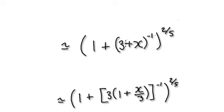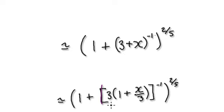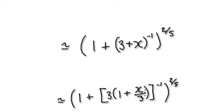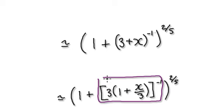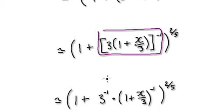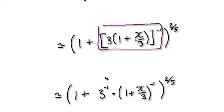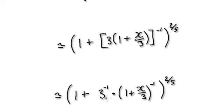And then here, factor out this three. That would then give you this. So now we can take the approximation of the inner bit, and that would then give us this.